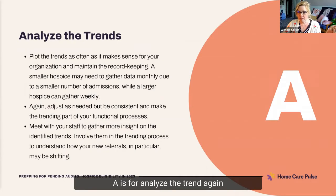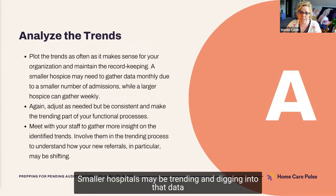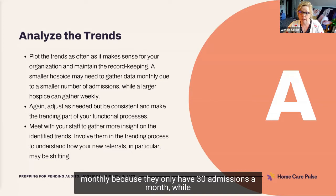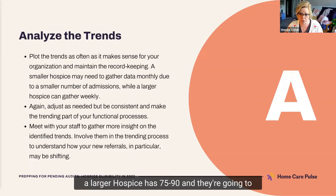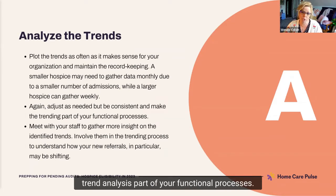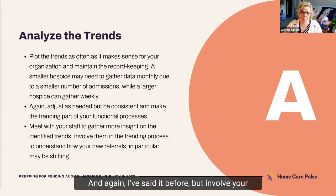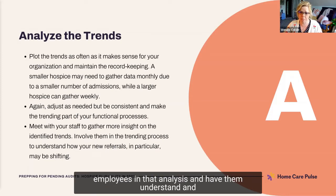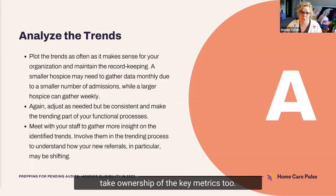A is for analyze the trends, based on your own individual agency. Smaller hospices may be trending and digging into that data monthly because they only have 30 admissions a month, while a larger hospice has 75 or 90, and they're going to want to keep up with their trends weekly. Do what makes sense for your agency — the point is to make trend analysis part of your functional processes. Build it into your workflow, and involve your employees in that analysis so they understand and take ownership of your key metrics too.